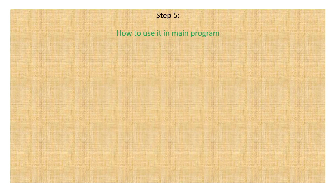The next step is how to use the function module in the main program. This is one of the critical parts — one part is creating the function module, and you can use it independently. Now let's look at how you can use it in the main program.